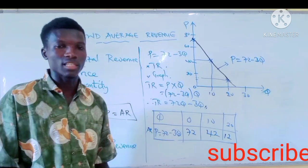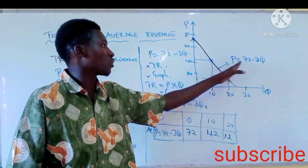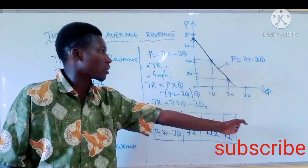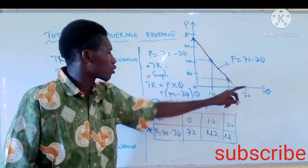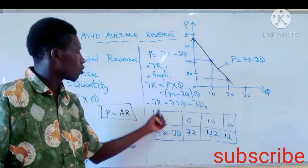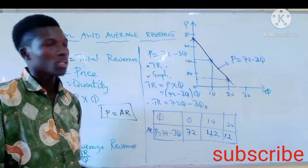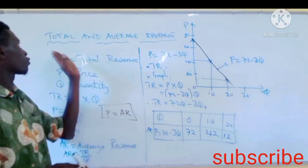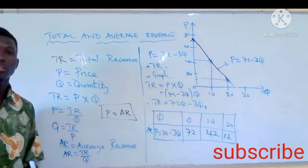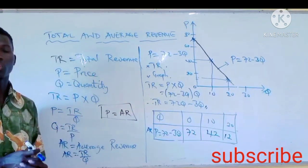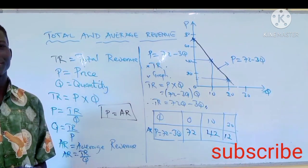You can sketch your graph as easily as that. You know your price, which is also your average revenue, and you know your total revenue. That is how total and average revenue works. Thank you so much for watching. Please don't forget to subscribe.